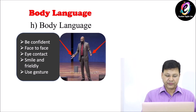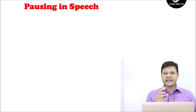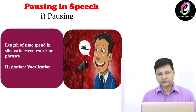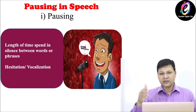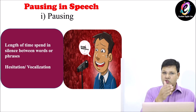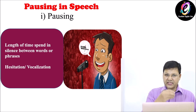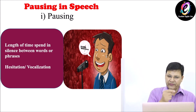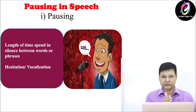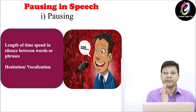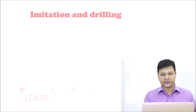The next element is pausing — just to stop somewhere where necessary. For example: 'He is a good player, a student, and a businessman.' After 'good player' I will make a pause, then continue. Wherever you have a comma, a full stop, or a semicolon, you will have to make a little pause, then go further. This is called pausing.